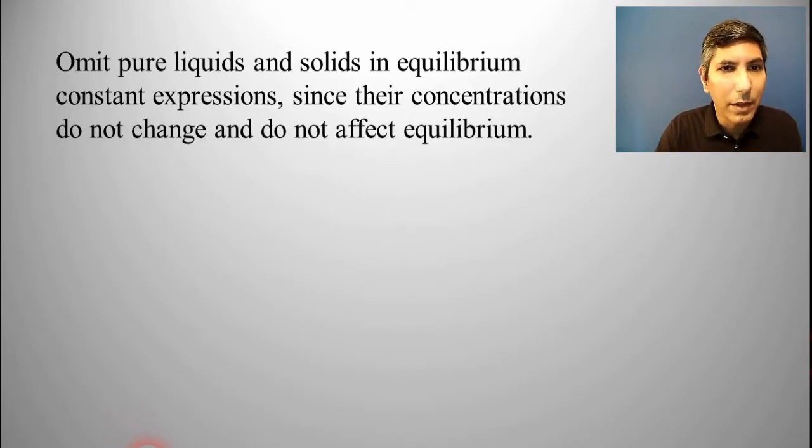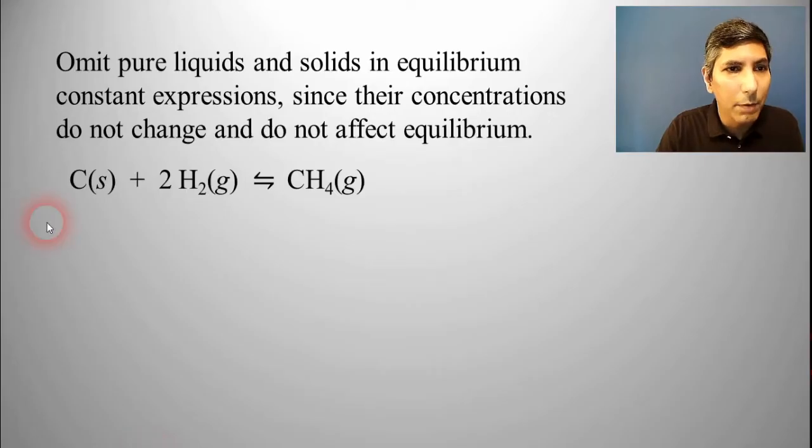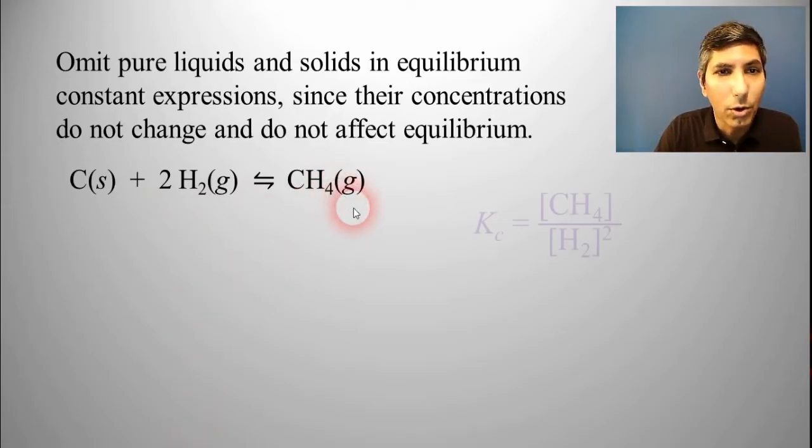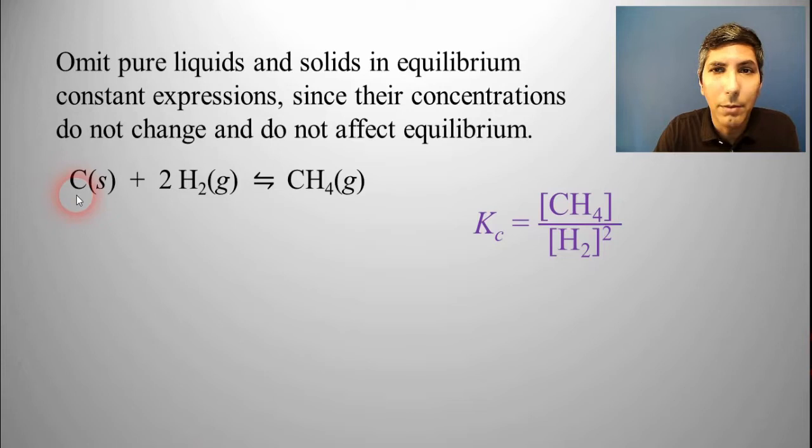If you have a problem like this, where you have carbon solid plus 2 hydrogen gas yields methane, as you write this, it's going to be KC equals CH4 concentration all over H2 quantity squared. You just leave out the carbon, because it's a solid, and so it's not going to be a part of this at all.